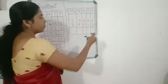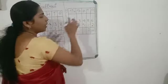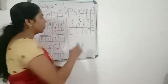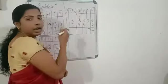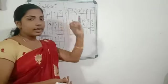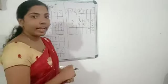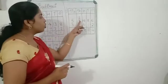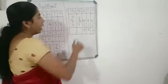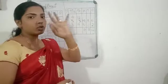Starting from the ones place: six minus two is four. Eight minus one is seven. Four minus five is not possible, so we borrow from the next place. The three becomes two and the four becomes fourteen. Fourteen minus five: after five, six, seven, eight, nine, ten, eleven, twelve, thirteen, fourteen — that is nine. Now two minus nine is not possible, so we borrow again. The five becomes four and the two becomes twelve. Twelve minus nine: after nine, ten, eleven, twelve — that is three.